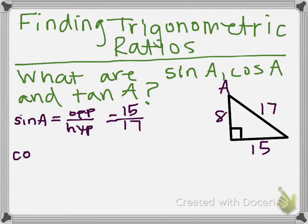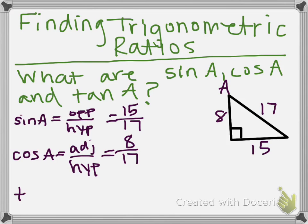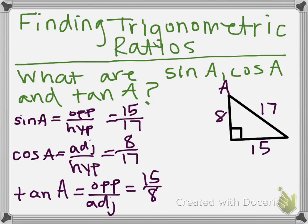Next, we are going to look for the cosine of A. Cosine is going to be the adjacent over the hypotenuse, so it will be 8 over 17. And finally, to find the tangent, we are going to use the opposite leg over the adjacent leg, so we are going to have 15 over 8. You can leave it just like this — we don't want to put it into any decimals, just leave it as a ratio.